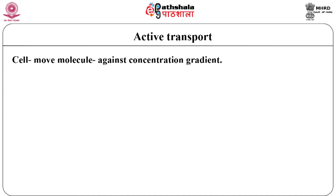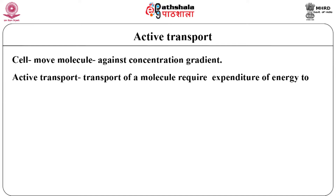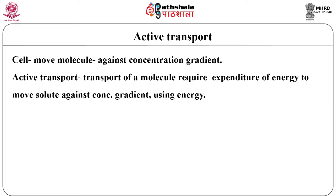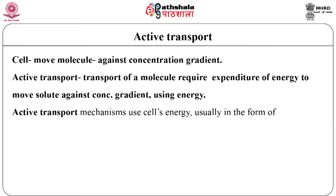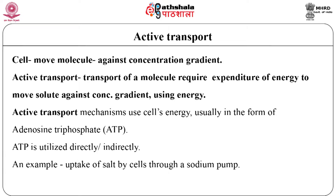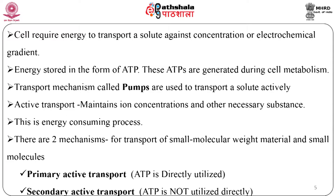Cells also need to move molecules against the concentration gradient. Active transport is the transport of molecules which requires expenditure of energy to move solute against concentration gradient using ATP. Active transport mechanisms use the cell's energy usually in the form of ATP, that is adenosine triphosphate. In the case of secondary active transport, ATP is utilized indirectly. It is also called uphill transport, moving against a gradient.